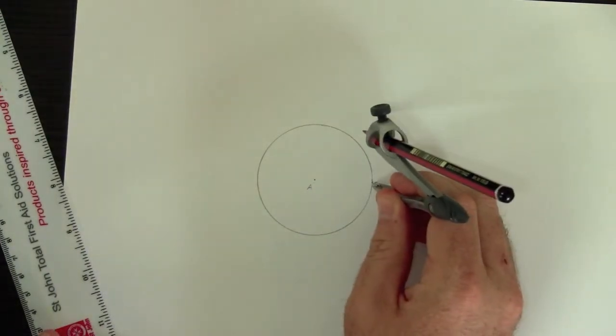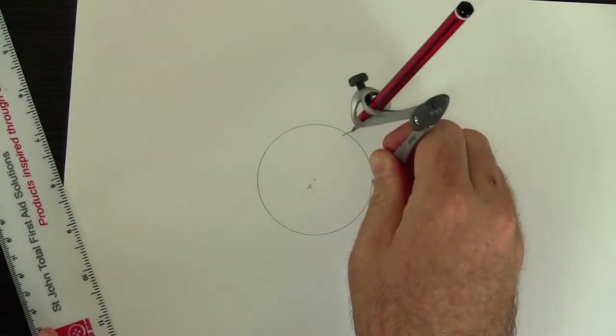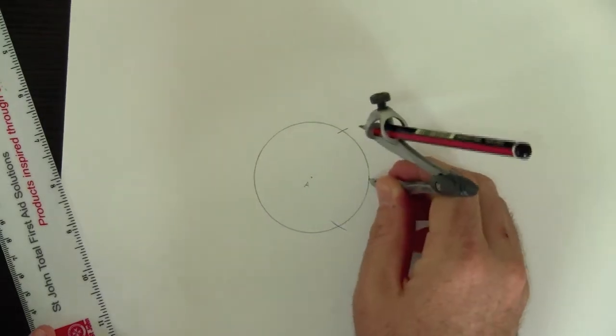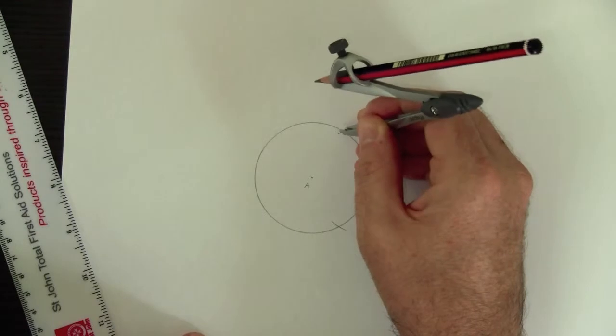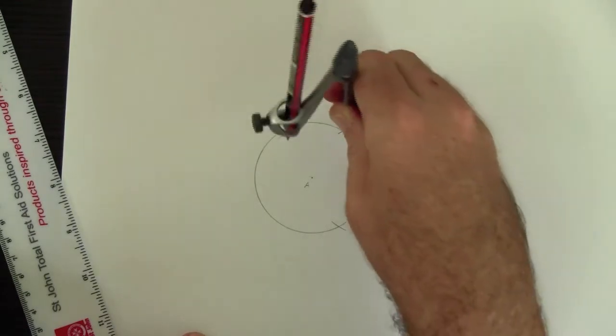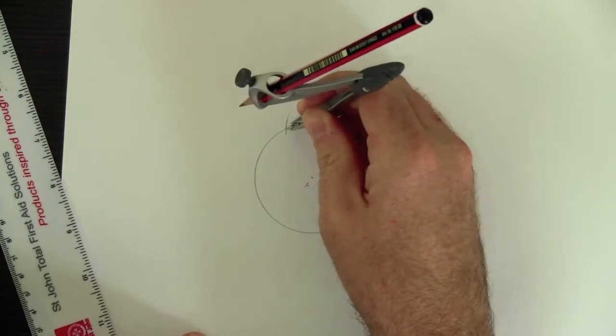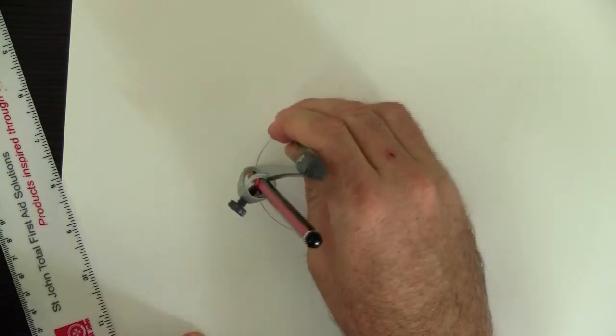And then, you put your point on the edge of the circle. Draw two new points like that, with two little arcs. And then, again, and again.